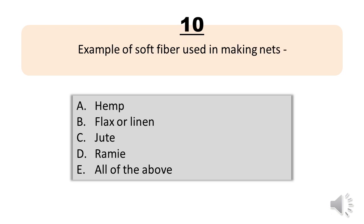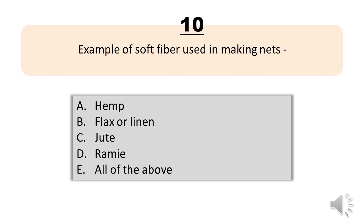Number 10. Example of soft fiber used in making nets. A. Hemp. B. Flax or linen. C. Jute. D. Ramy. E. All of the above. The correct answer is Letter E. All of the above.